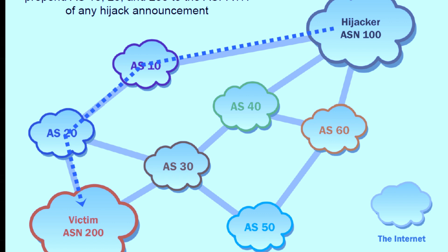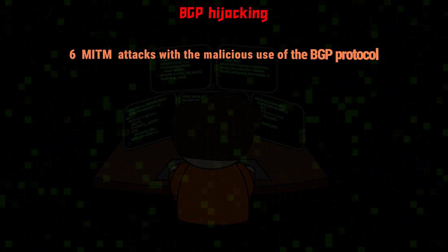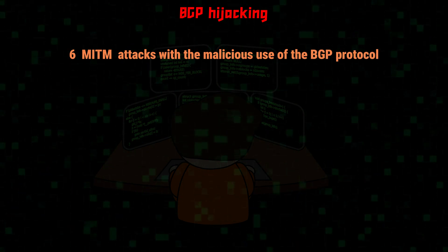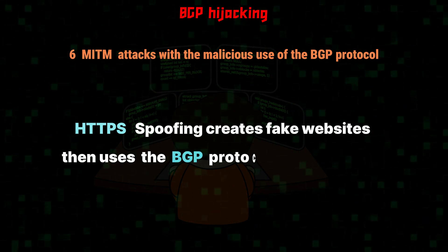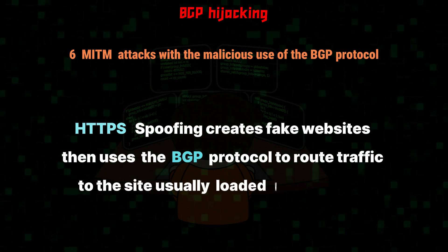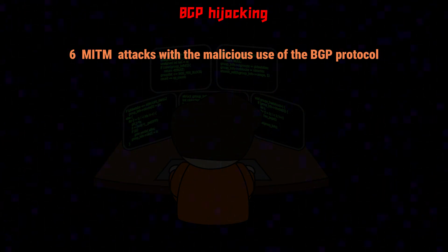How hackers use BGP attacks: a man-in-the-middle attack is a malicious redirection of the BGP protocol. The impact of a well-organized assault can be devastating to the business economy anywhere downstream. A man-in-the-middle attack can be used alone or be part of a much larger coordinated scheme. There are six man-in-the-middle attacks using the BGP protocol. Number 1: HTTPS spoofing creates fake websites, then uses the BGP protocol to route traffic to the site, usually loaded with malware.